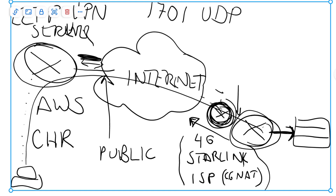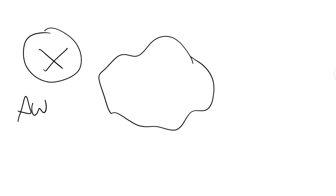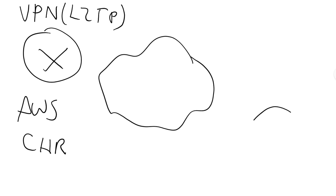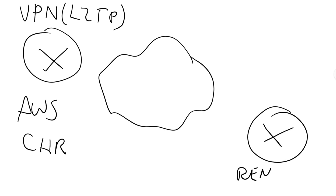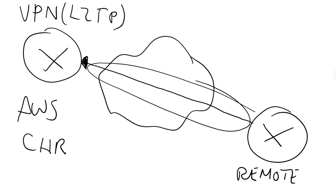To summarize the diagram: we have the cloud, an AWS CHR which is our L2TP VPN server, and over here we have our remote client. The remote client connects outbound to establish a VPN tunnel across the internet into our server. It gets an IP address on its end of the tunnel, and we add static routes — you could also use dynamic routing protocols like BGP or OSPF, but for this example we'll use static routes so we can route all traffic out through AWS.